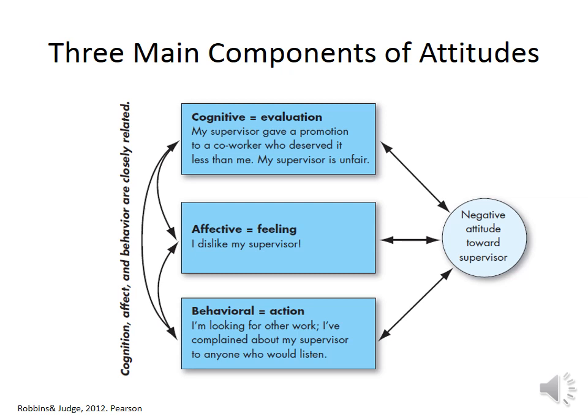there are mainly three main components of attitudes. First, the cognitive component, which represents the opinion and belief segment of an attitude. The second is the affective component, which represents the emotions or feelings part of an attitude. The third is the behavioral component, which is an intention to behave in a certain way towards someone or something.